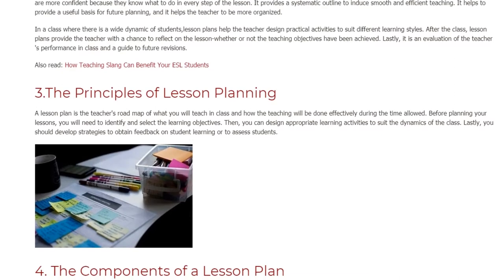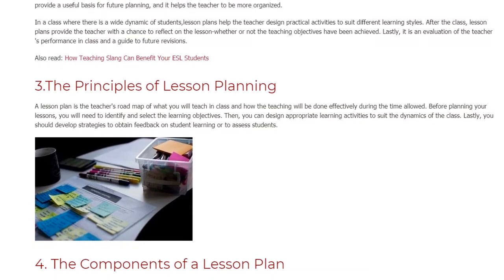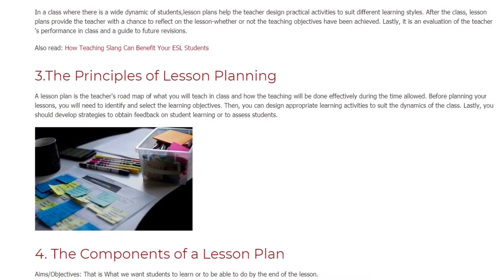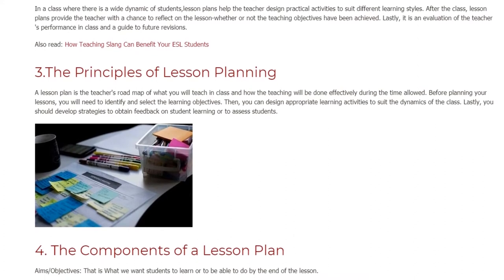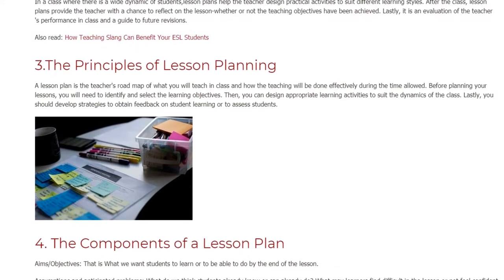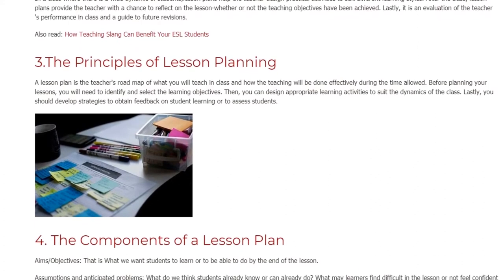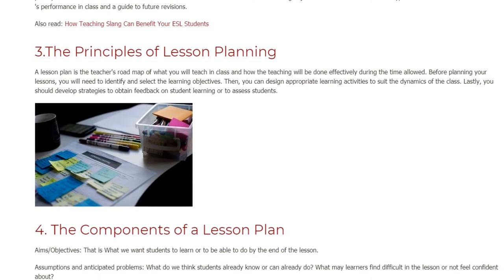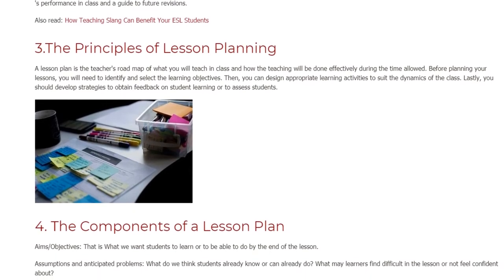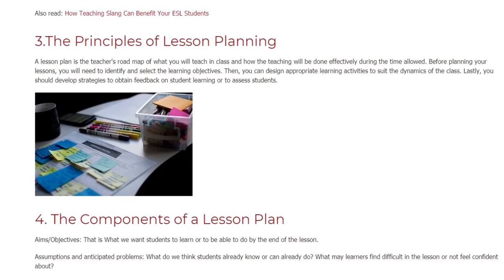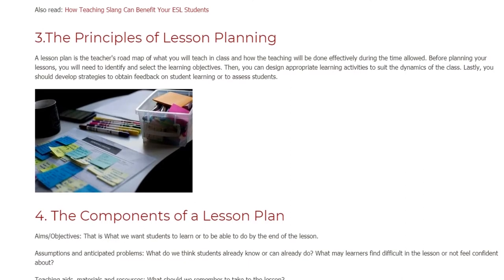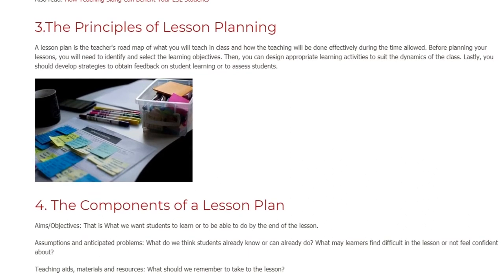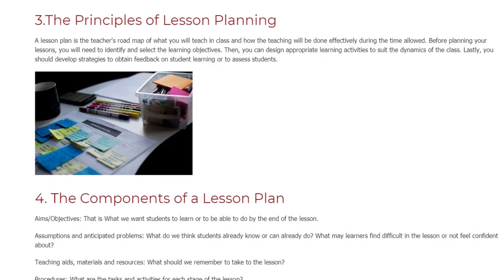The Components of a Lesson Plan. Aims or Objectives: that is what we want students to learn or to be able to do by the end of the lesson. Assumptions and Anticipated Problems: what do we think students already know or can already do? What may learners find difficult in the lesson or not feel confident about?